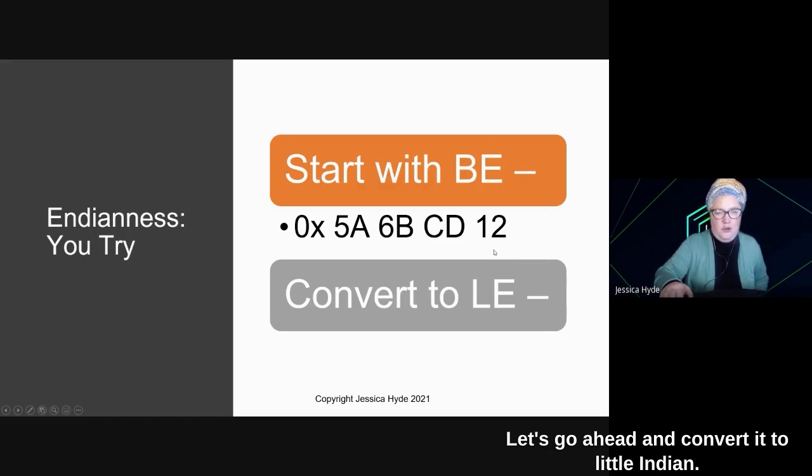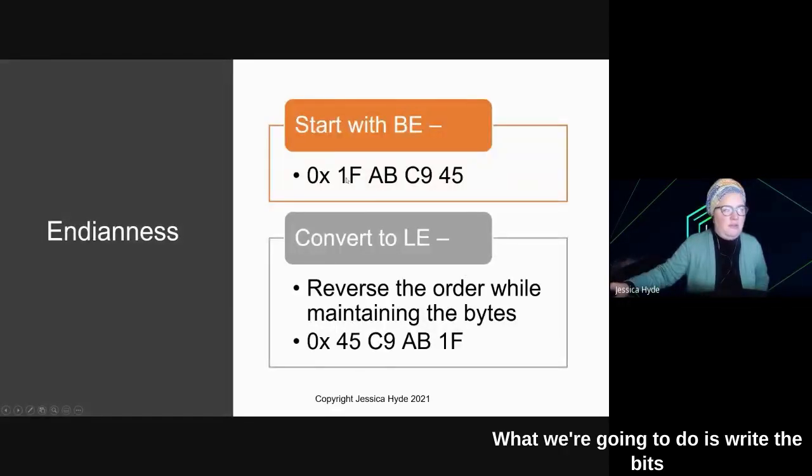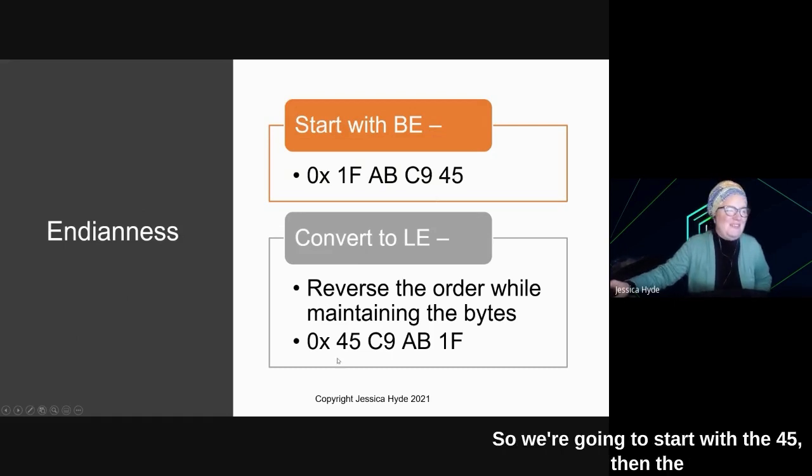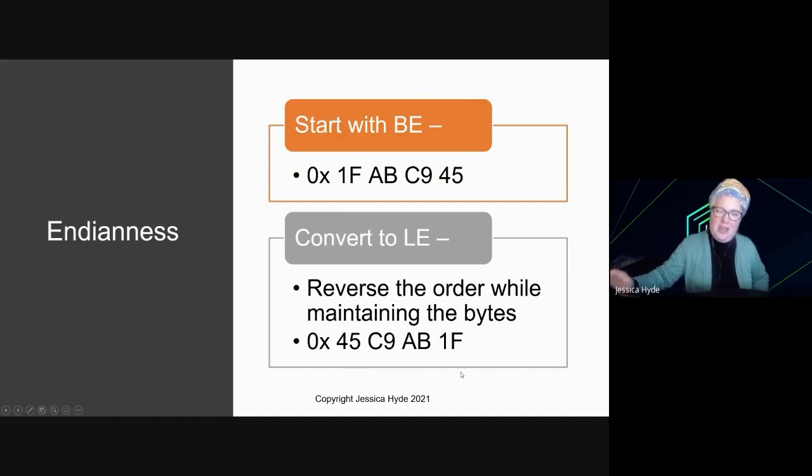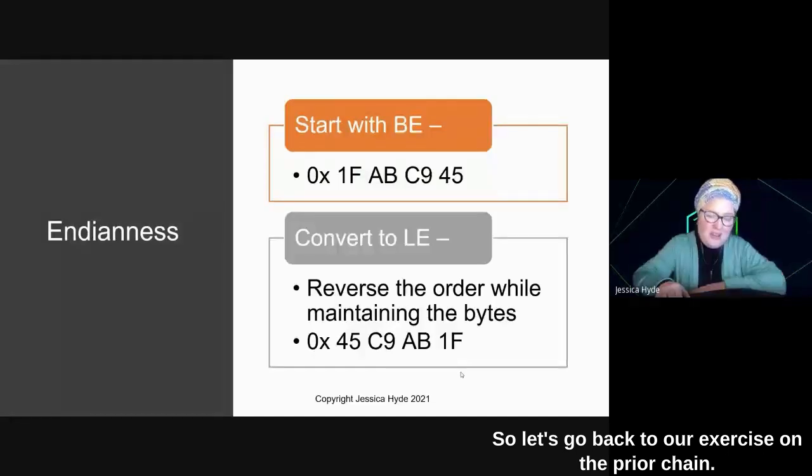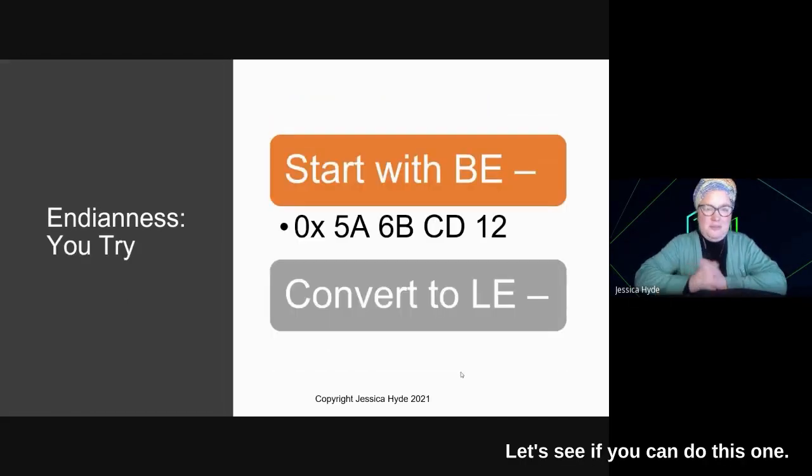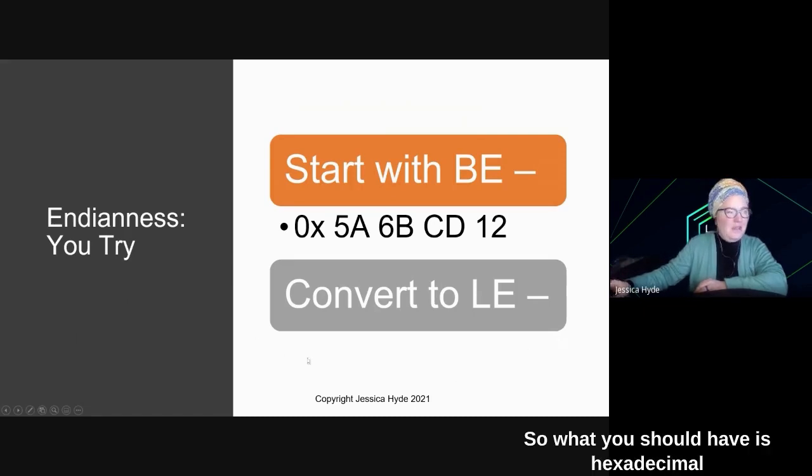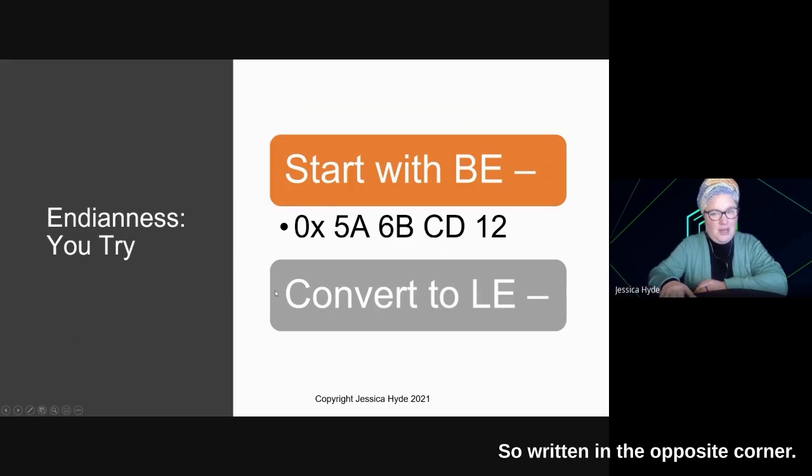What we're going to do is write the bytes in the opposite order. So we're going to start with the 45, then the Charlie 9, then the Alpha Bravo, then the 1F. So let's go back to our exercise on the prior page. Let's see if you can do this one. You can pause here. Perfect. So what you should have is hexadecimal 1, 2, Charlie Delta, 6 Bravo, 5 Alpha. So written in the opposite order.